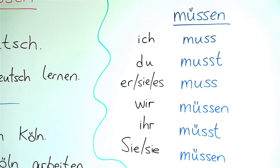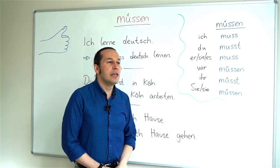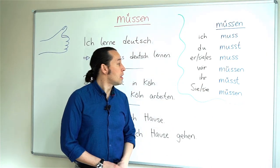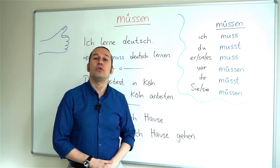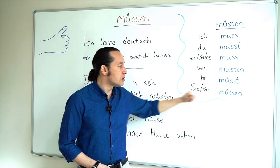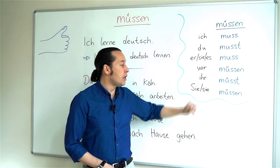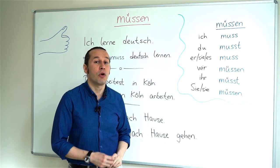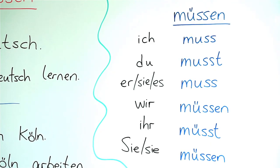Here we have wir. Wir müssen — 'we must.' Ihr müsst. Ihr stands for the second plural form, so if I mention a group of two or more people, that indicates to ihr. So ihr müsst. Sie müssen — sie is the polite form of saying 'you,' and it also stands for the second plural form if I mean 'they.' So this covers the full conjugation of müssen.